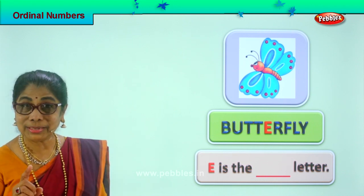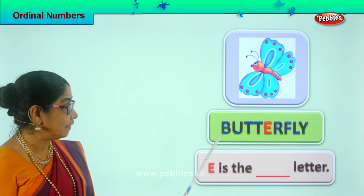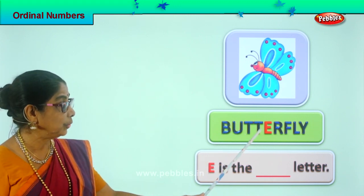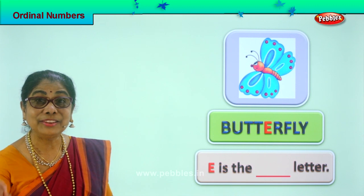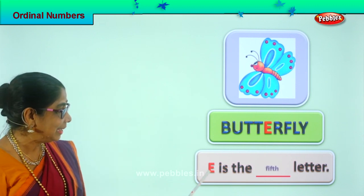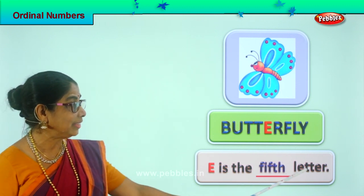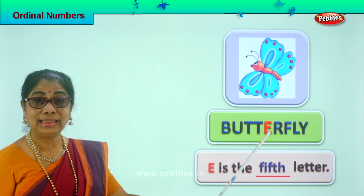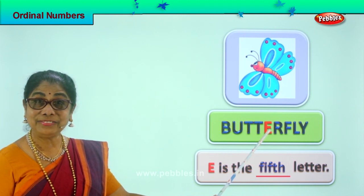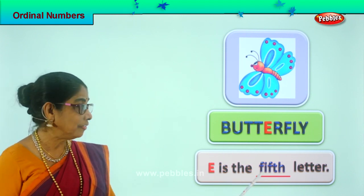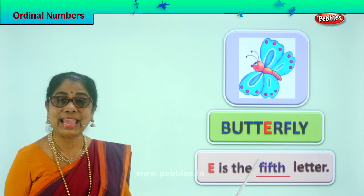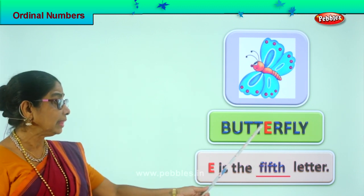Now let's see what is the ordinal position. First, second, third, fourth — letter E is in the fifth position. Excellent! E is the fifth letter. The fifth letter in butterfly — letter E is colored and that's the fifth letter. Spell fifth: F-I-F-T-H, fifth. E is the fifth letter.